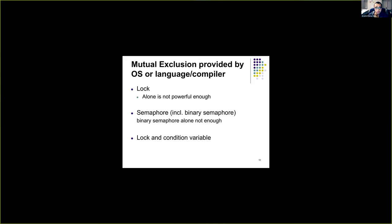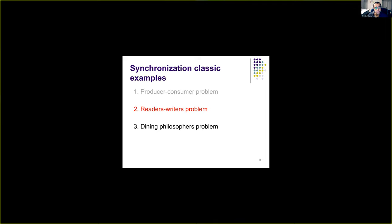Mutual exclusion is provided by three different synchronization primitives. Locks are not powerful enough when we want multiple processes accessing a resource. We also looked at semaphores including binary semaphores. In today's lecture we'll see why binary semaphores are not enough. We also looked at condition variables and their associated locks. In this lecture we will look at the readers-and-writers problem, a famous synchronization problem similar to producer-consumer, which helps us understand subtle issues in process synchronization. In the next lecture we'll look at the dining philosophers problem.